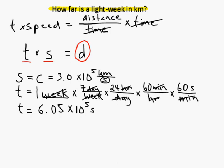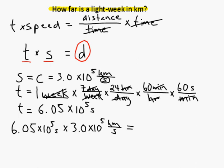Okay, so what we need to do now is rewrite our equation with numbers instead of symbols. 6.05 times 10 to the 5 seconds, that's the time, times 3.0 times 10 to the 5 kilometers per second, that's the speed. And multiplying those two together will give us our answer.